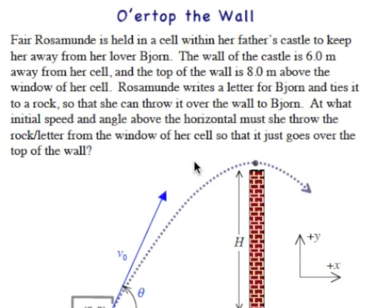Fair Rosamund is held in a cell within her father's castle to keep her away from her lover Bjorn. The wall of the castle is six meters away from her cell, and the top of the wall is eight meters above the window of her cell.